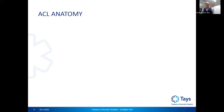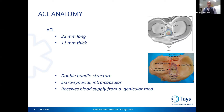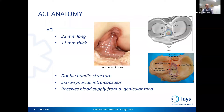The anterior cruciate ligament is a ligament in the knee joint between the tibia and femur. It is 32 millimeters long with a thickness between 10 and 11 millimeters. It is a double bundle structure, extra-synovial but intracapsular. It receives blood supply from the arteria genicularis mediale, giving it very good vascular supply — which is why we see a hemarthrosis whenever the ACL is ruptured.